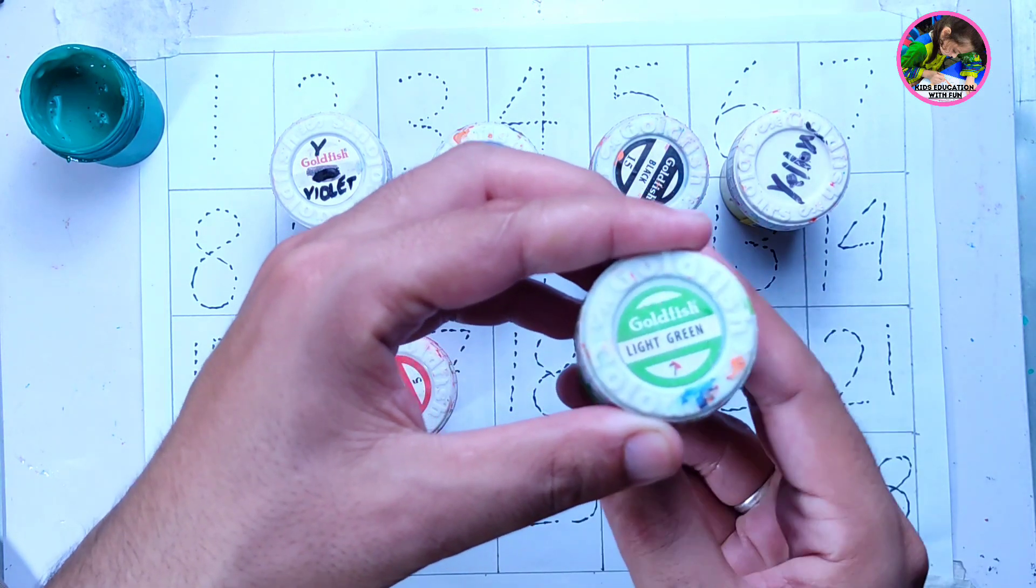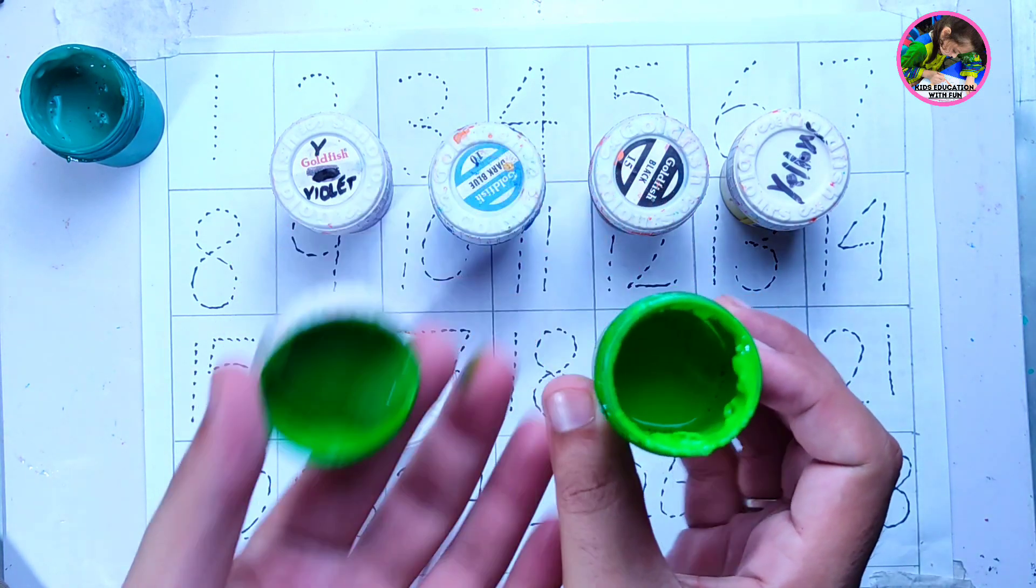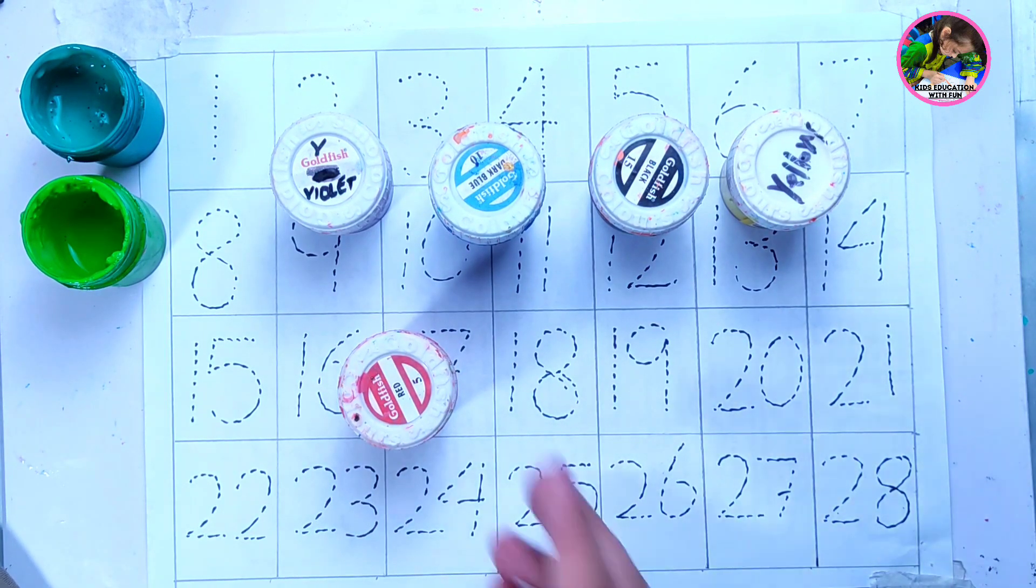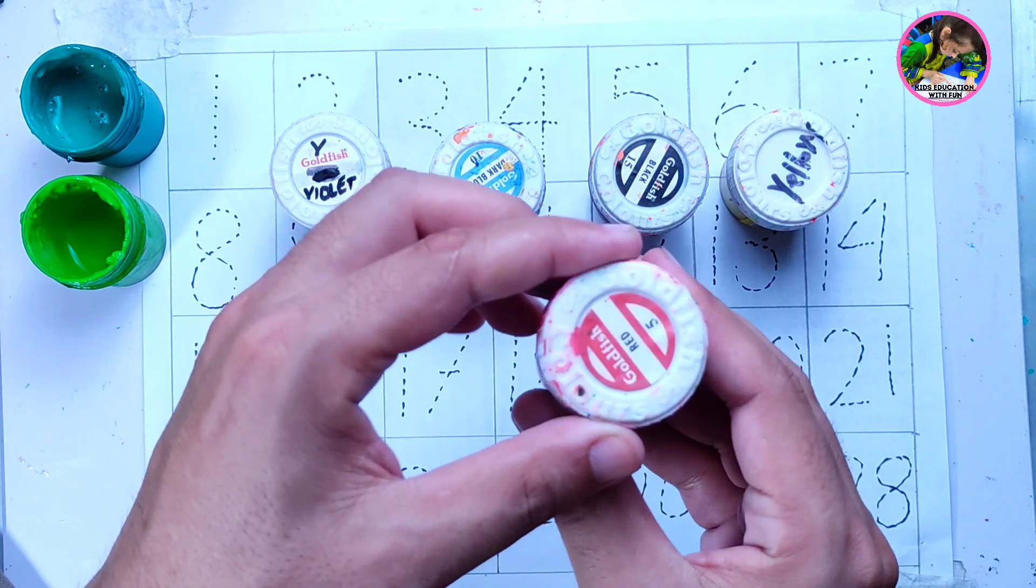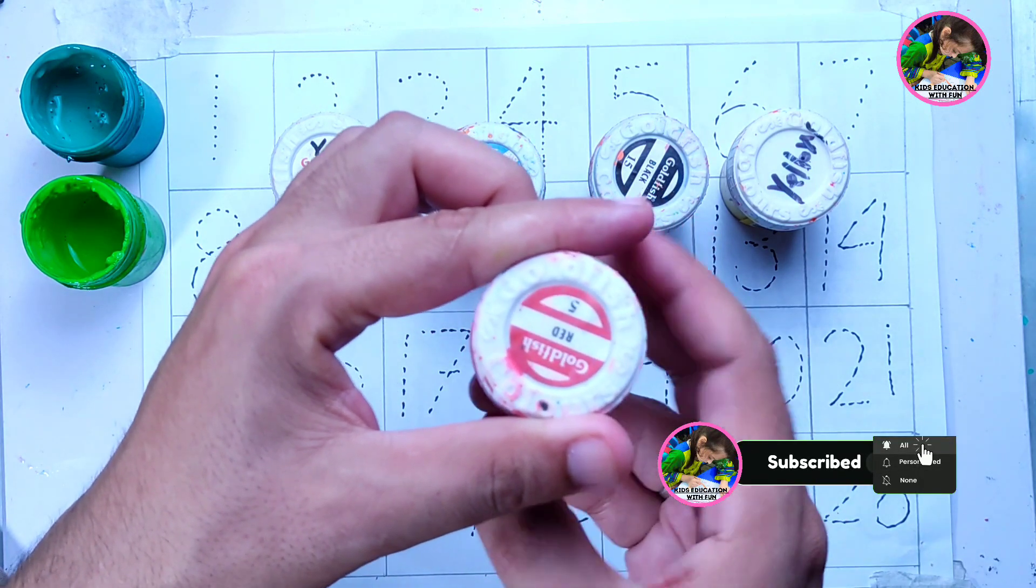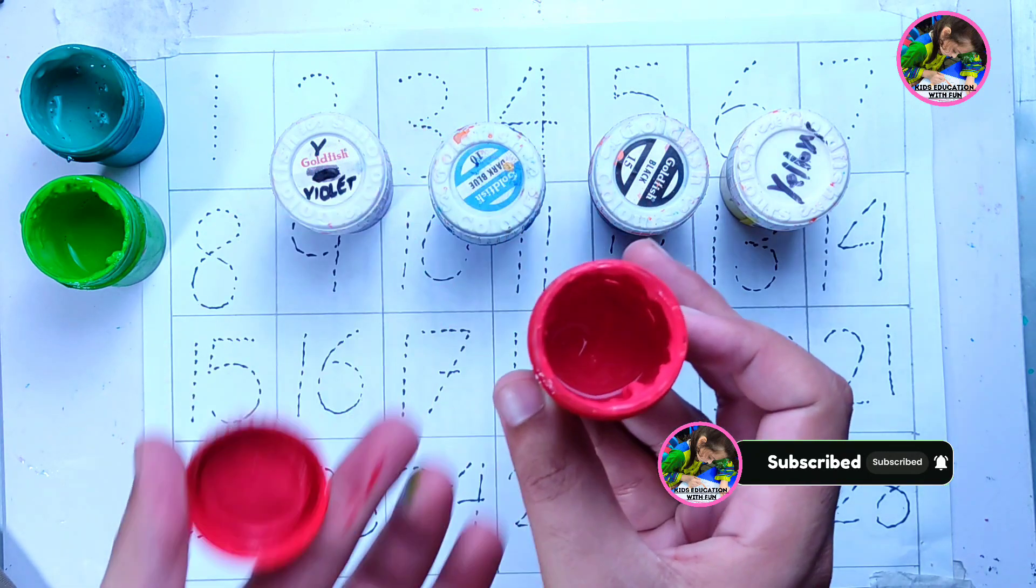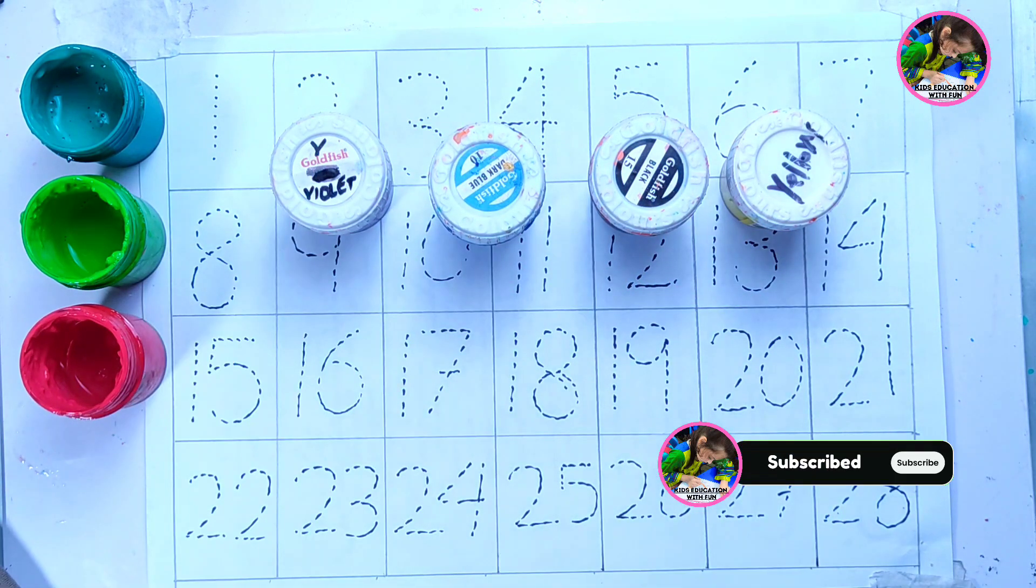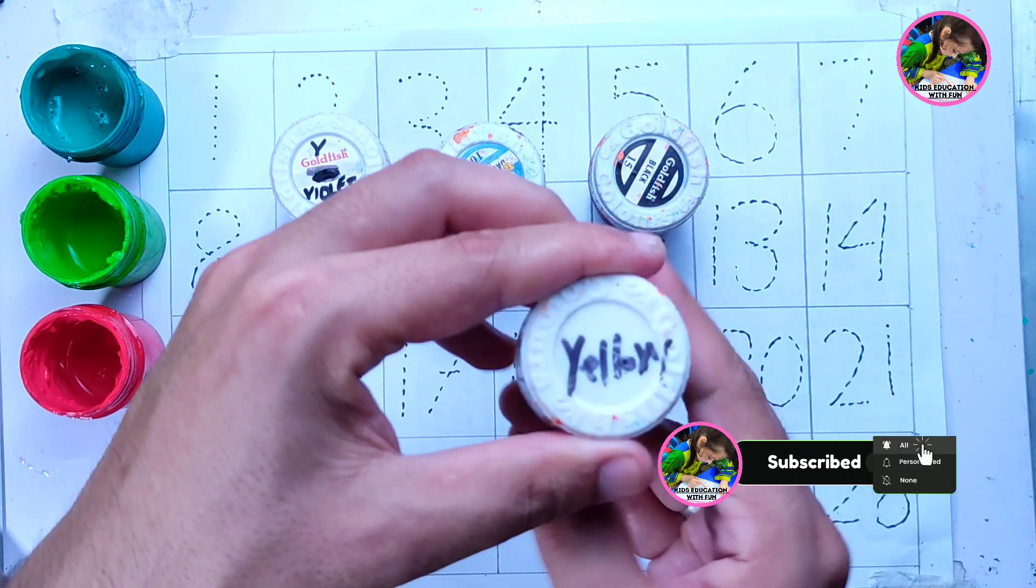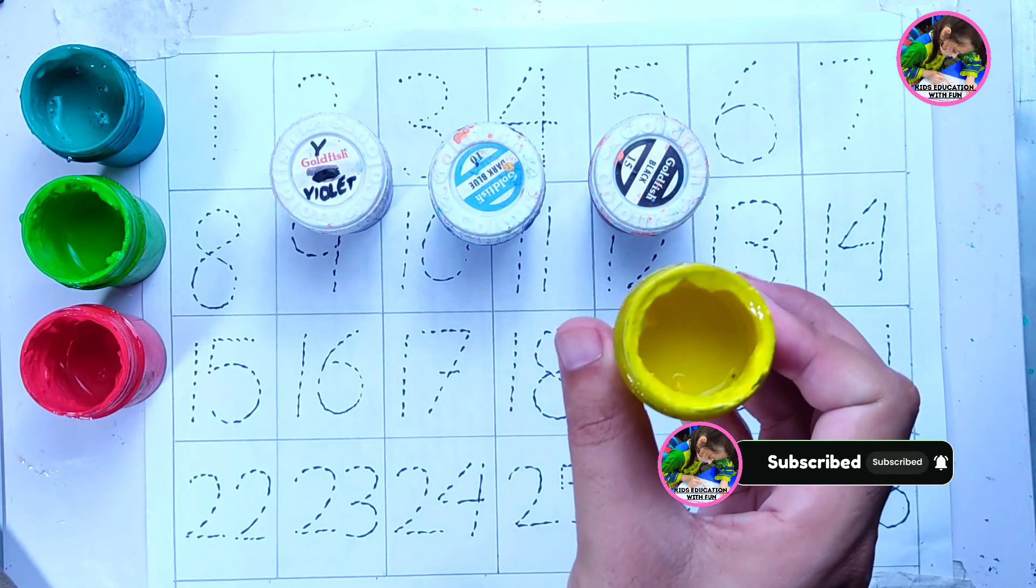This is light green color, light green color. This is red color, which color? Red color. And here we have yellow color, this is yellow color.